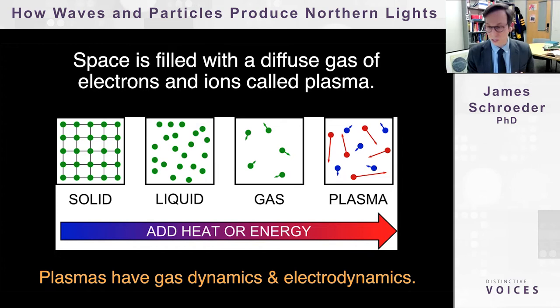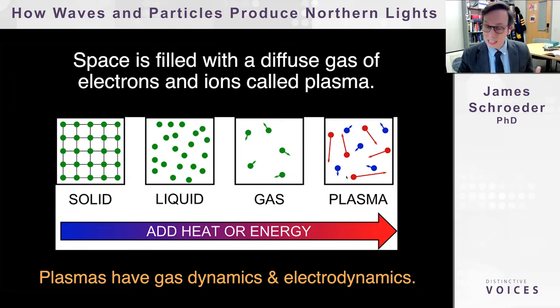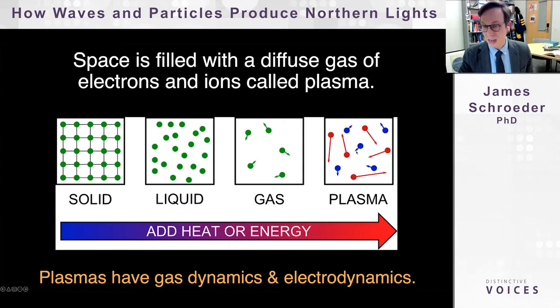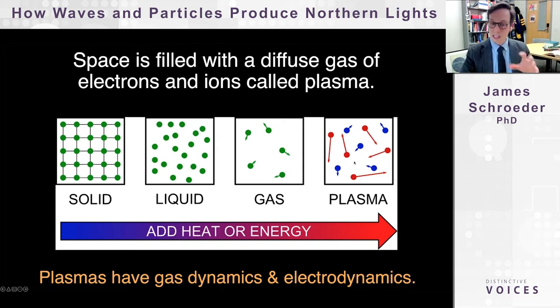Plasmas are remarkably complex because they have gas dynamics — pressure, temperature, sound waves, shock waves — but also electrodynamics, with electrons and ions exerting electric and magnetic forces on each other. Currents can flow through plasma, and electromagnetic waves can exist within it. All of these things happen simultaneously, making plasma intellectually fascinating and complicated to study.